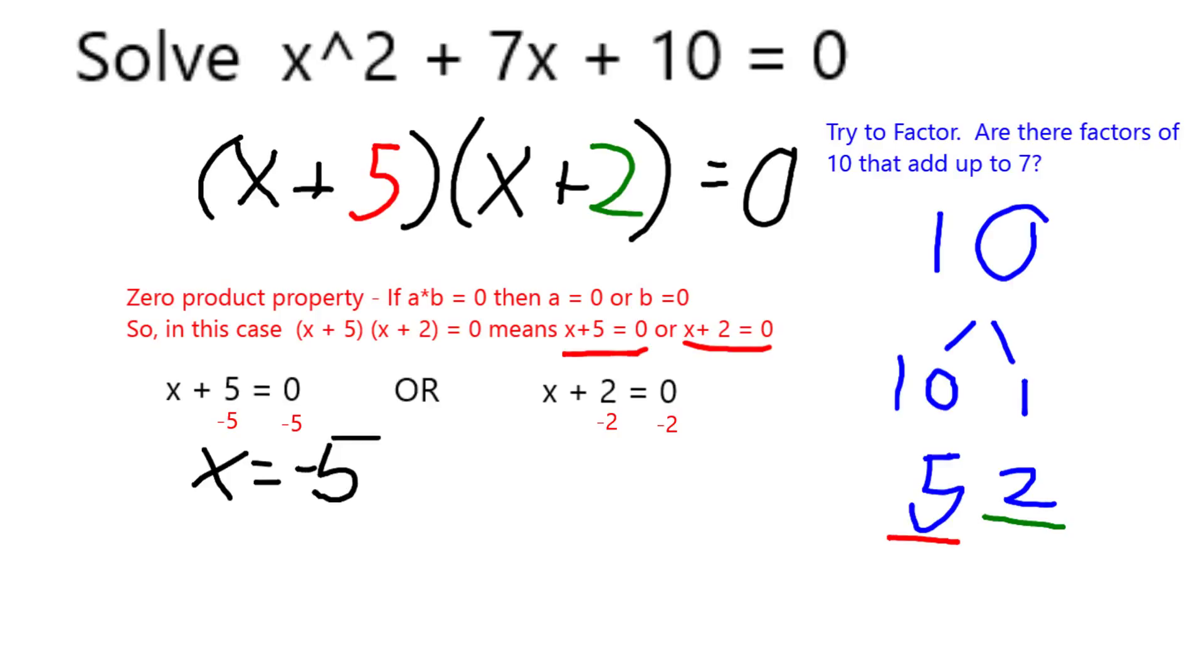So x plus 5 equals 0 means that x is negative 5, and x plus 2 equals 0 would mean that x is equal to negative 2. Those are my two possible solutions.